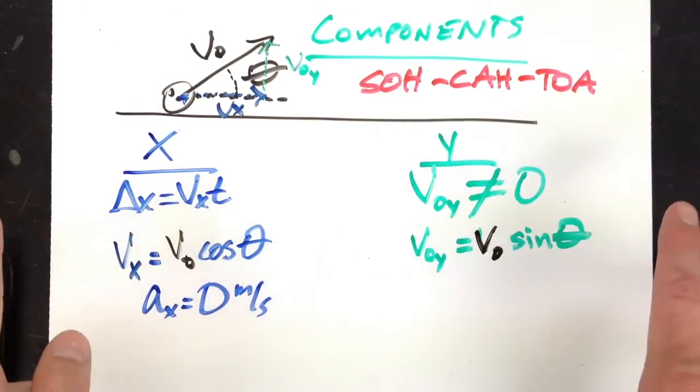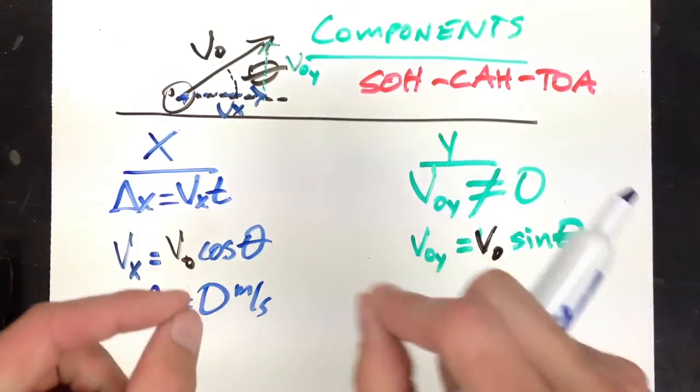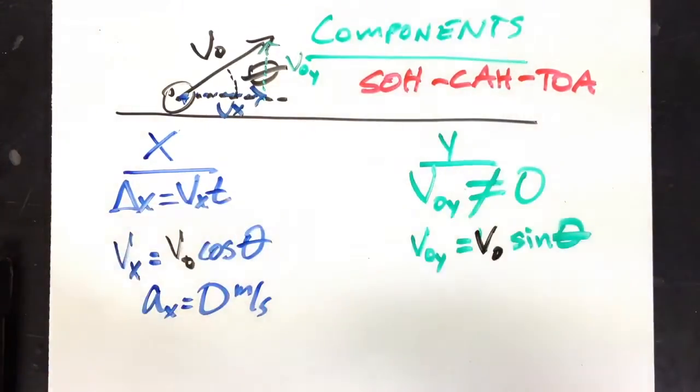So once you do this, you go about the problem the exact same way. You write down everything that you know about the x dimension. You write down everything you know about the y dimension. And then you go from there.